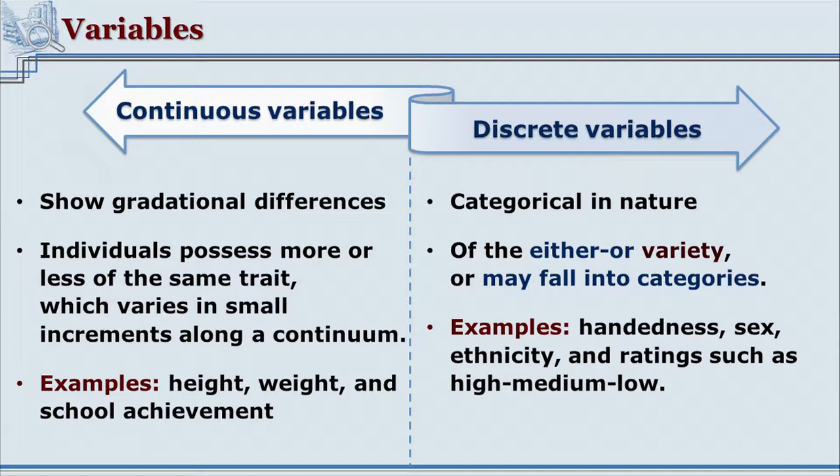According to one basis of classification, variables are divided into continuous variables and discrete or non-continuous variables. In case of continuous variables, there is a very small gap between the gradations of variations possible. For example, height — it could be five feet one inch, five feet one and a half inch, five feet two inch. Similarly, weight of persons is also continuous; you can go to the details of kilograms and even grams. The variable can take a numerical value in a continuous manner.